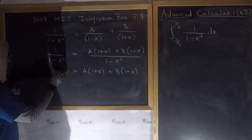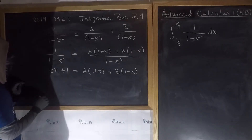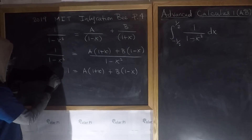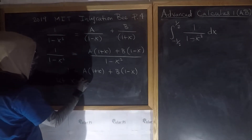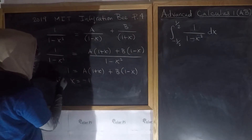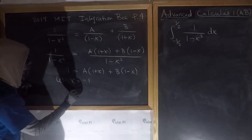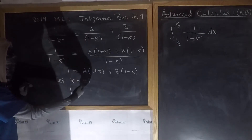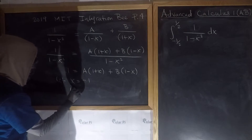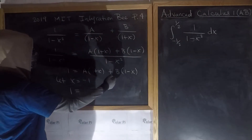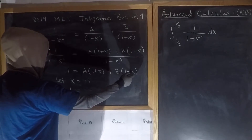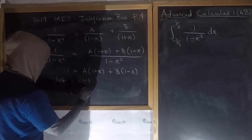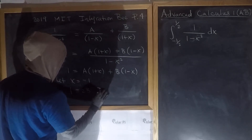You can solve this via systems of equations, but the most efficient method is to make strategic choices of x. If we let x equal negative 1 — because this equation must hold for any x — we get 1 equals A times (1 minus 1), so A times 0. That's why x equals negative 1 was strategically chosen. In the second term we get 1 minus (negative 1), so B times 2, giving us 2B, from which b equals one half.